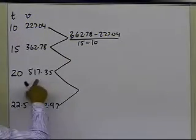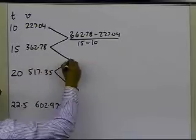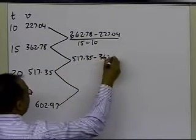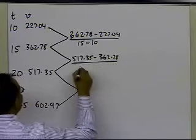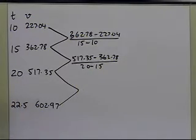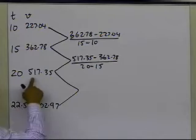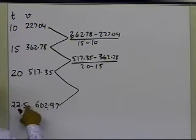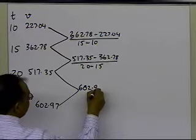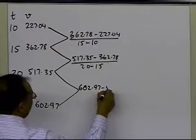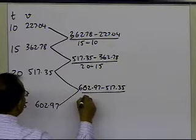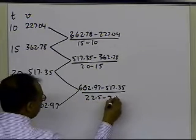Same thing here, the first divided difference will be 517.35 minus 362.78, divided by 20 minus 15. And again, the first divided difference would be 602.97 minus 517.35, divided by 22.5 minus 20.